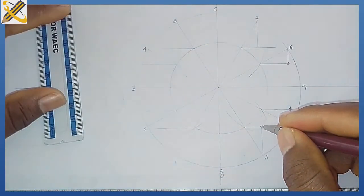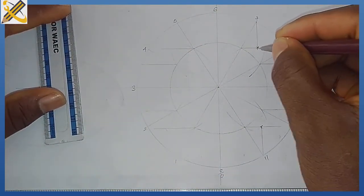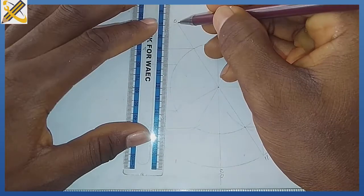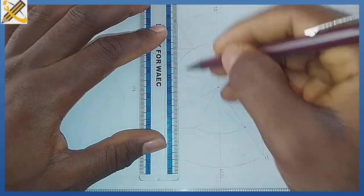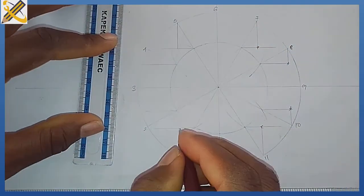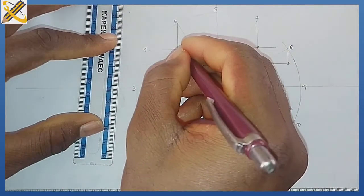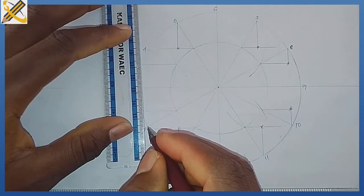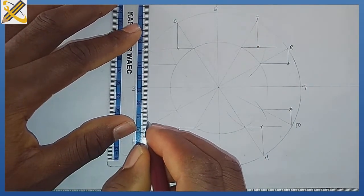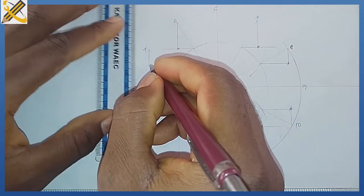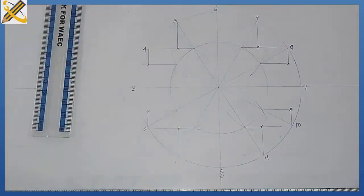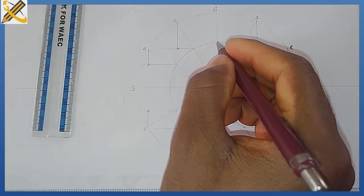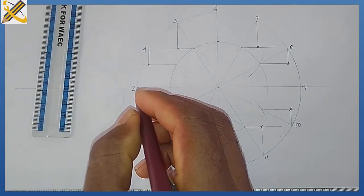This is its point of intersection. Then five and one, this is its point of intersection. Then four and two. I already have my points of intersections, so my elliptical curve is going to pass through these points.